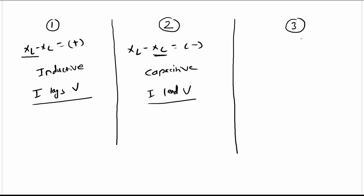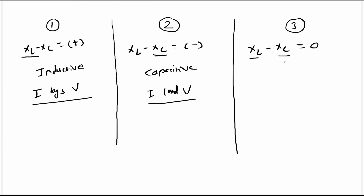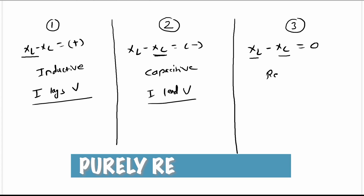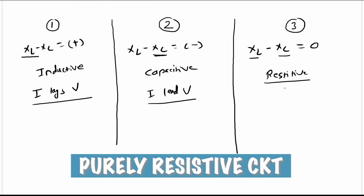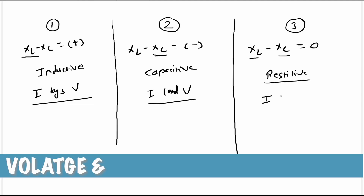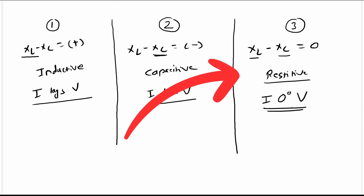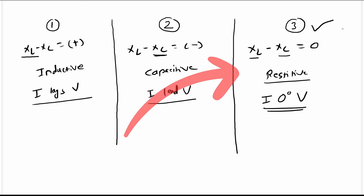There can be a third condition where the value of XL minus XC would be zero — that means both XL and XC are equal and opposite, so XL minus XC equals zero. In such a case the RLC circuit acts as a purely resistive circuit, and there won't be any phase lag between voltage and current — the voltage and current would be perfectly in phase. In the circuit we have seen, this third condition is met, and as a result the circuit is operating as a purely resistive circuit.